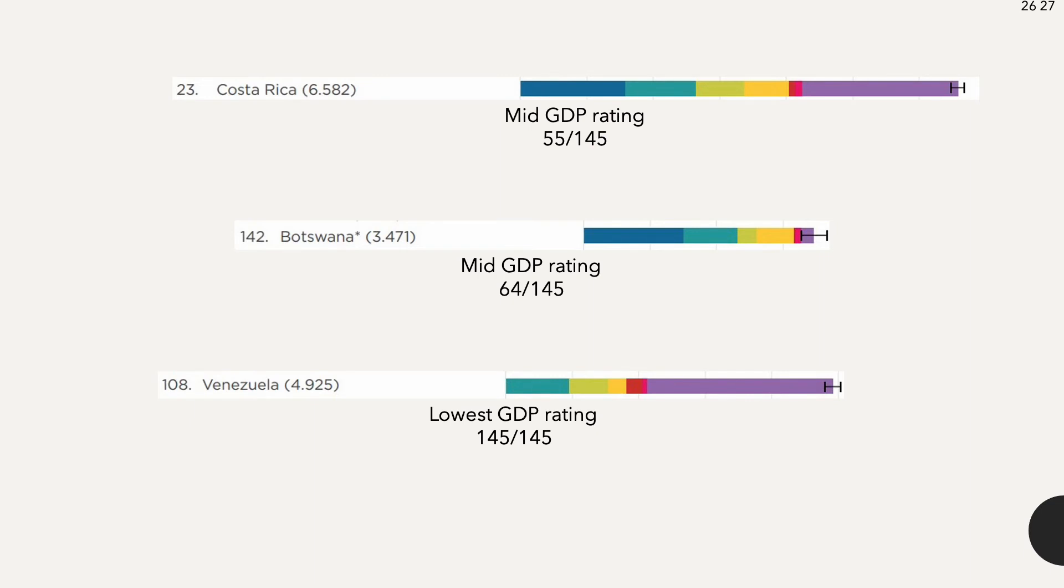Meaning, even though Venezuela has the lowest GDP among all of the 145 countries in the study, there are 37 other countries listed as less happy.